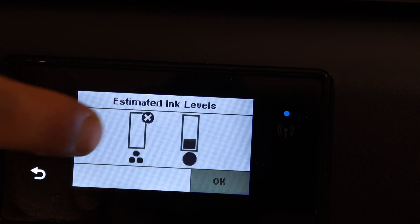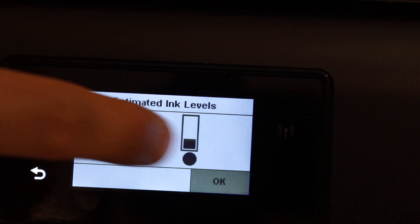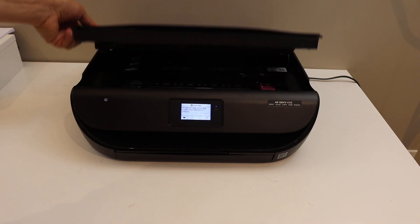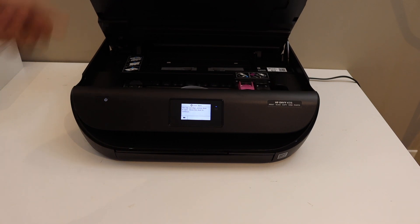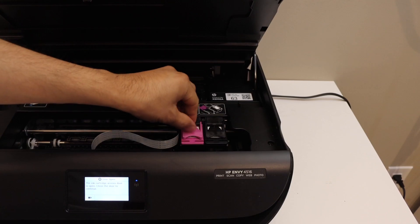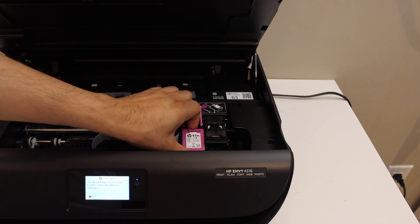Check the ink here. You will see the tricolor ink cartridge and black. Open the ink cartridge chamber door. This printer uses ink number 63. Open the lock and take the ink cartridge out.